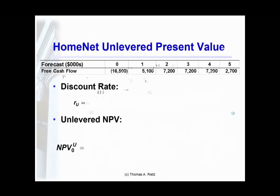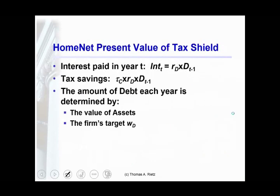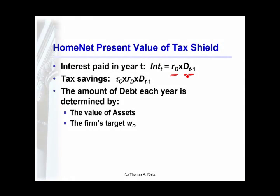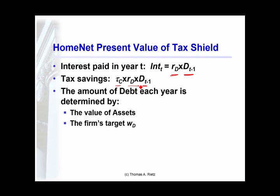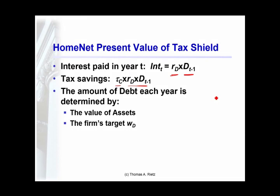Then we need to compute the value of the tax shelter. Every year there is some amount of debt. The next year, interest is owed on that debt at 5.5%, giving a tax write-off equal to the interest rate times the level of debt. We keep adjusting the level of debt according to the value of the remaining cash flows, the value of the assets, and the target debt ratio of 25%.